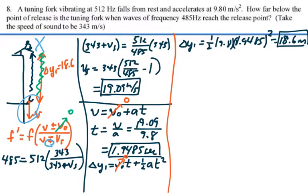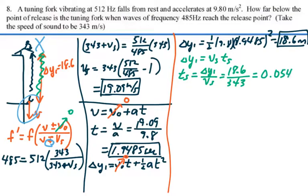So we have that this delta y1 is going to equal the velocity of sound times the time for the sound to reach our ears. So the time for that sound is going to equal delta y1 divided by the velocity of sound. That is going to be 18.6 meters divided by 343 meters per second. And that is equal to 0.0542 seconds.